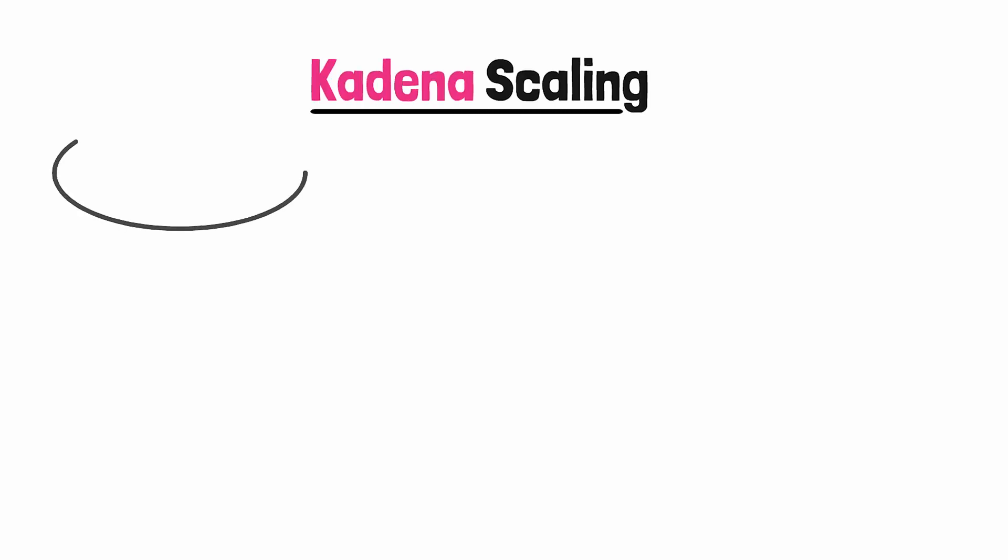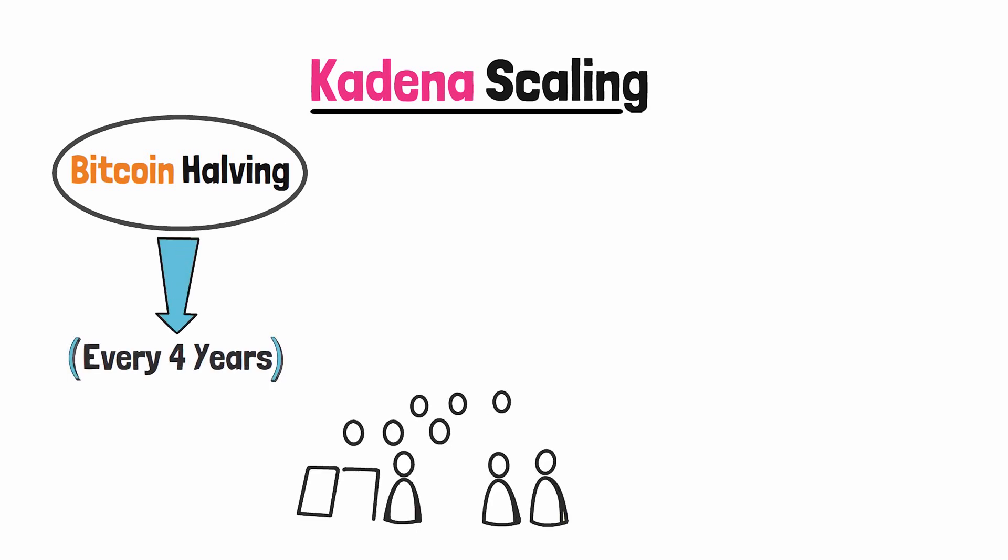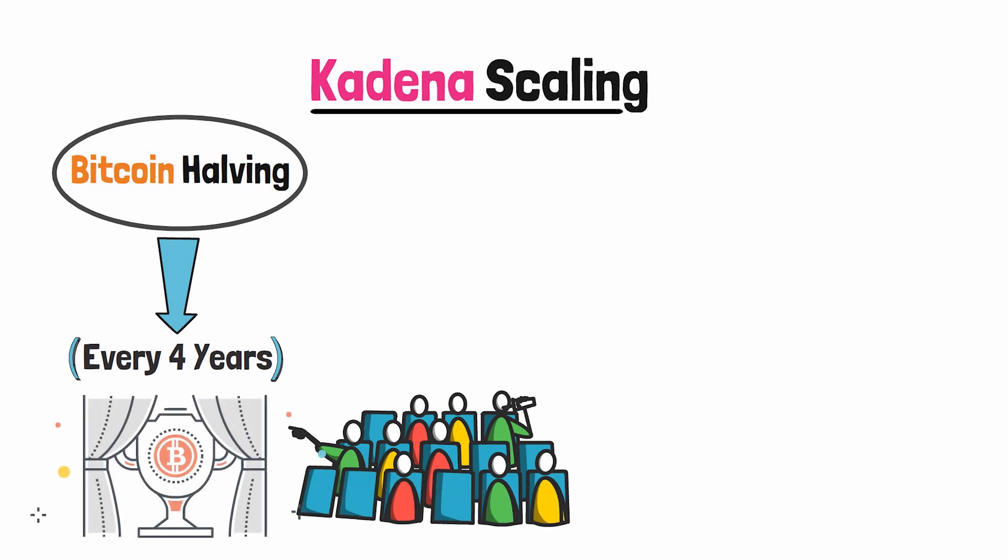Now I'm sure you've all heard about the Bitcoin halving. The Bitcoin halving happens every four years, give or take, and it's by far the most popular event in crypto history. But I think by 2030, the Kadena scaling will be an even bigger event.